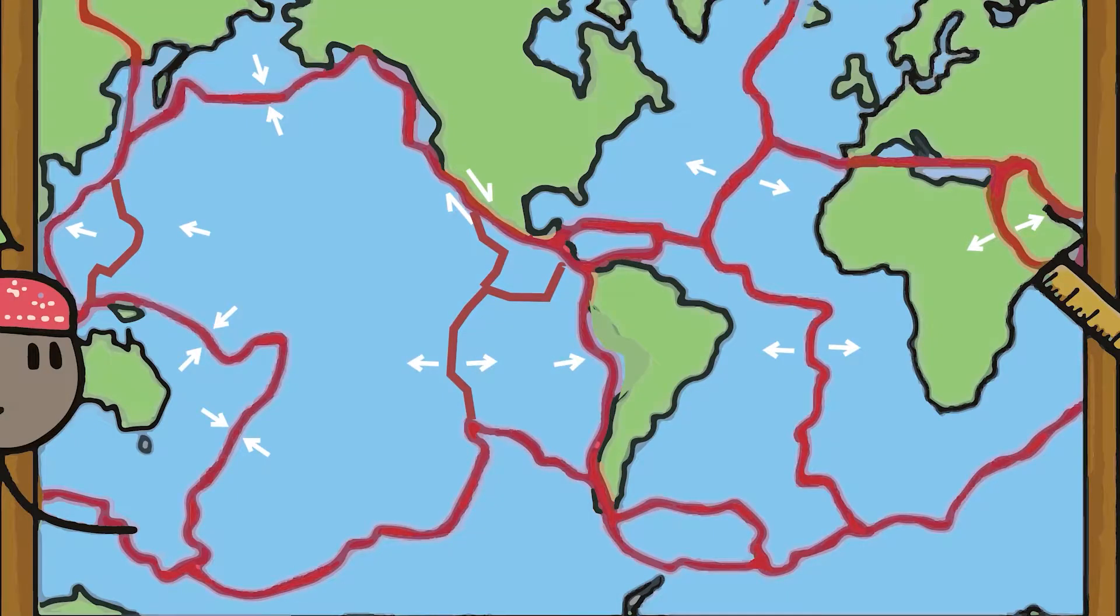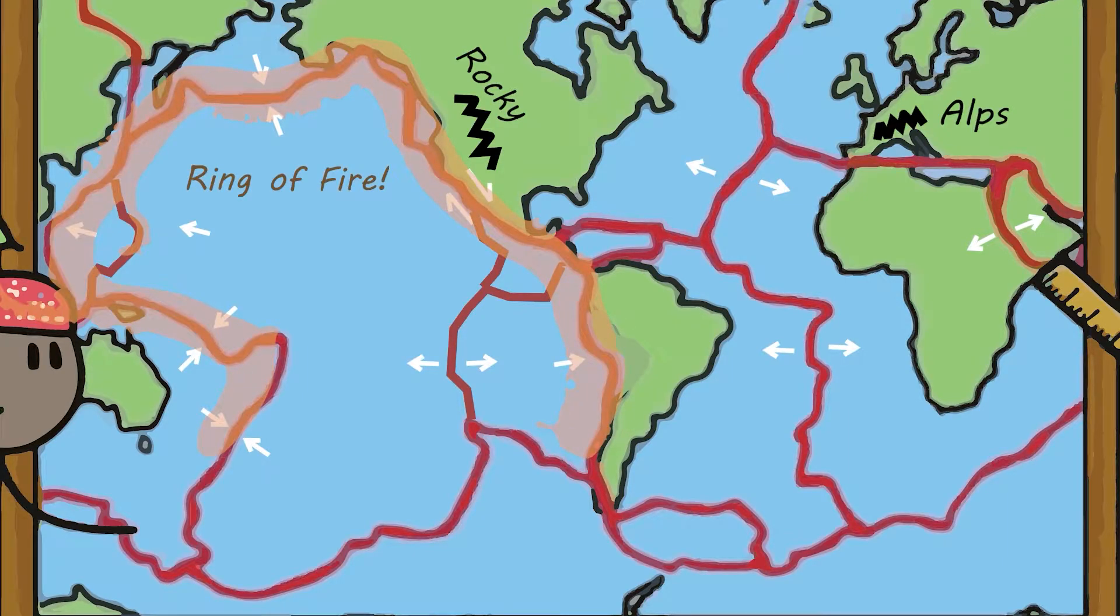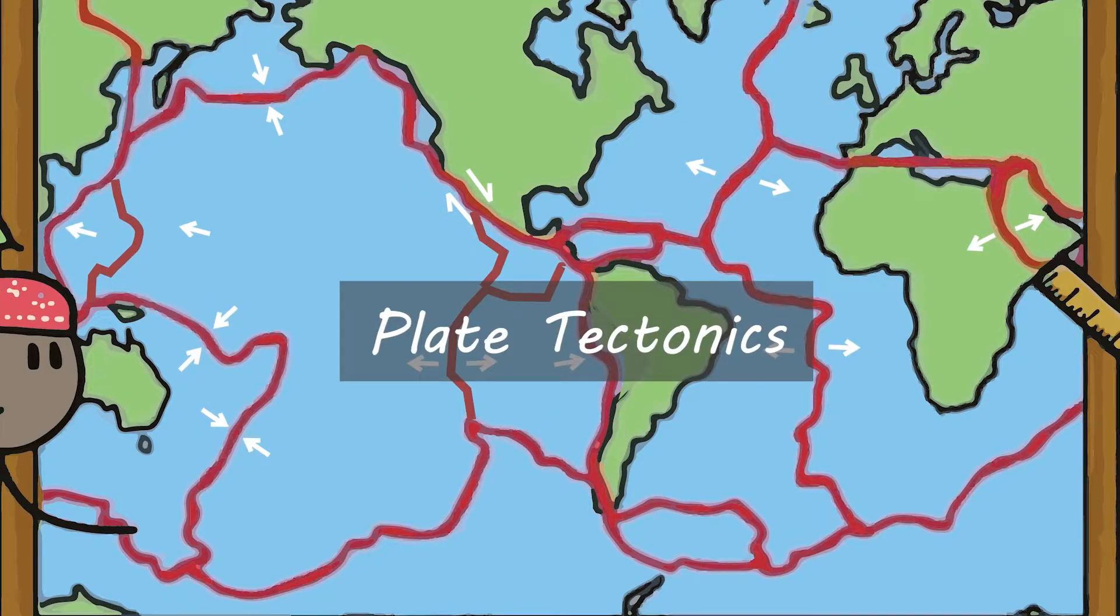These plates move and interact with each other to create various landscapes like folded mountain ranges and natural events like earthquakes. The theory that explains how these plates move is called plate tectonics, which is a special style of tectonics.